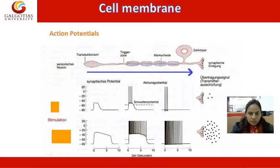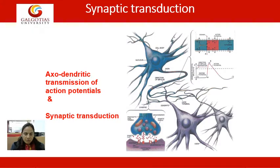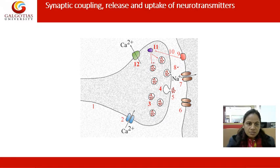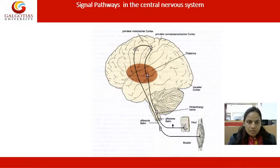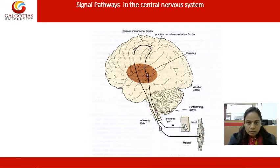Action potential within the nerve can be obtained at the synaptic potential. This is axodendritic transmission — one axon is attached to another dendron, transmitting neurotransmitters through synaptic activity. All signals pass from the synaptic cleft to another dendron, seen as synaptic coupling in the release and uptake of neurotransmitters. The signal pathway in the central nervous system passes through neurons in the same manner — axon to dendron — throughout the whole CNS.